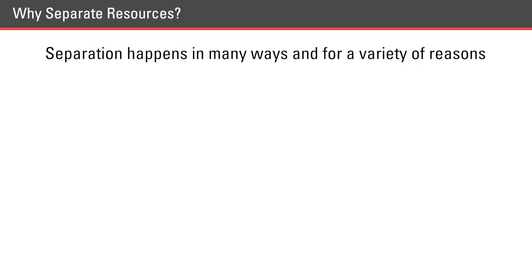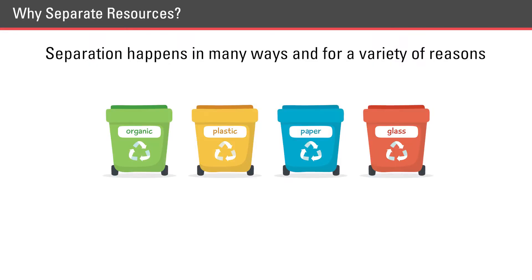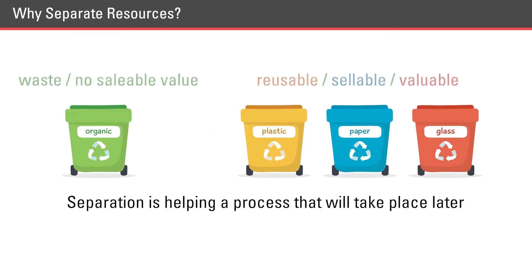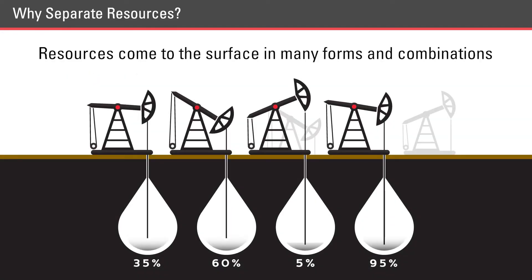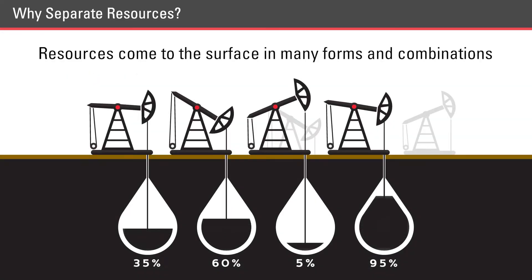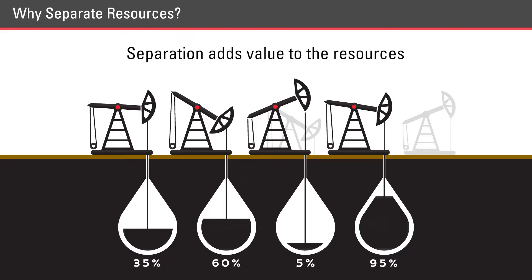Separation happens in many ways and for a variety of reasons. Think about why you separate what you recycle from the trash — it's helping a process that's going to take place later. It boils down to the fact that there are advantages to separating things, and the same is true in the energy industry. Resources come to the surface in many forms and combinations, and separation adds value to those resources. Sometimes we separate components for safety reasons.